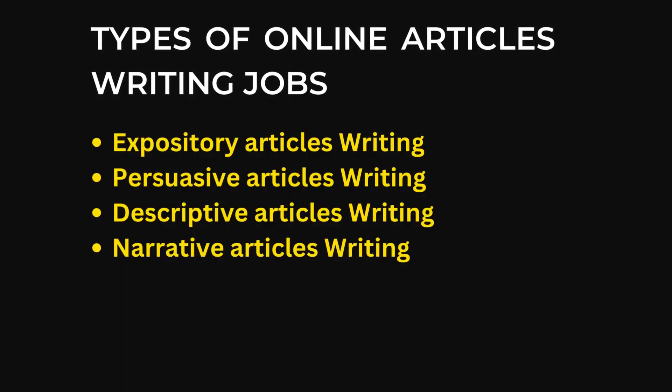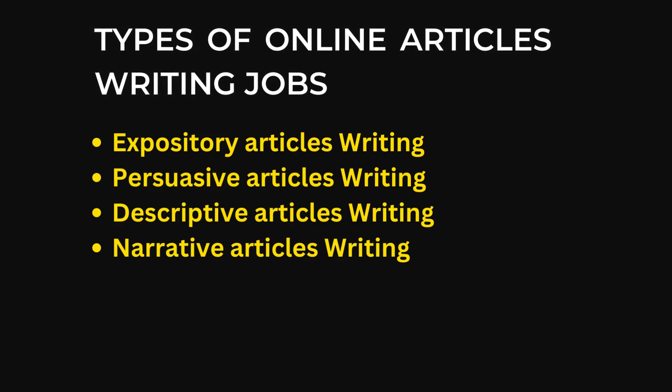Descriptive online article writing jobs: in this type of writing, we have to describe a topic with deep knowledge about it — like a place, an event, a person, or anything about which we have complete knowledge. Narrative article writing jobs: a narrative article is something like storytelling. If you want to narrate something, you should be skilled in narrative writing.